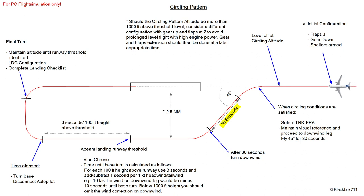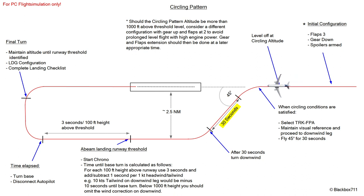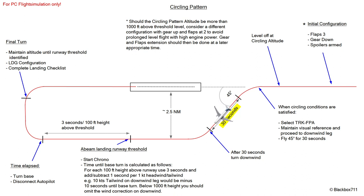So we're in the approach descending towards our circling altitude — in our example, 2,700 feet. That is because I rounded up to the next hundred feet value. We let the autopilot level off the aircraft, and then when the circling conditions are satisfied we select track and FPA. Maintain visual reference — normally we need visual reference to the landing runway at all times and also to the surrounding terrain. Then we proceed towards the downwind leg by turning left or right, depending on circling direction, by 45 degrees.